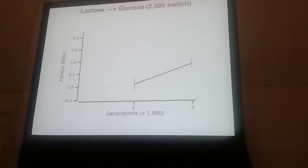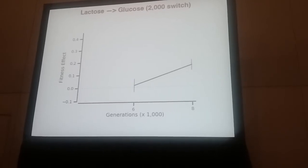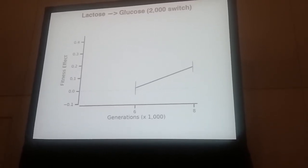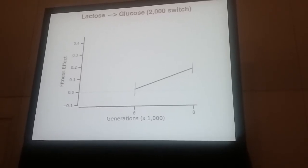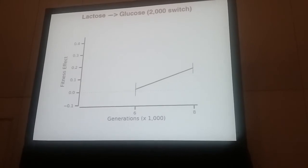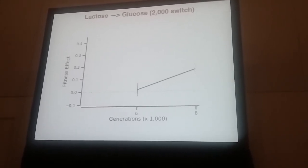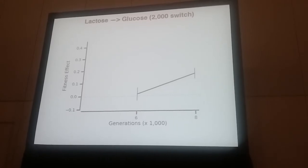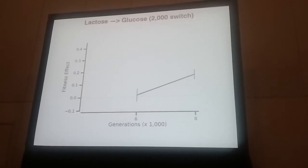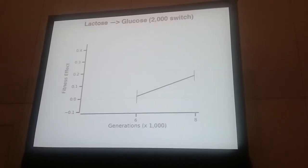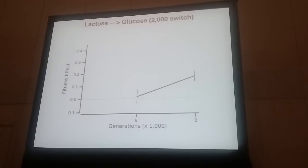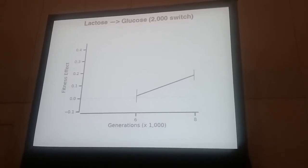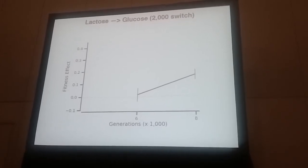I found this next one particularly interesting — this is the lactose-to-glucose 2,000-generation switching environment. There's only one population here that fixed the mutation. The first 2,000 generations were in lactose, then 2,000 in glucose, and from 4,000 to 6,000 was in lactose. At some point the mutation fixed and is slightly beneficial, though not significantly, at 6,000 generations. We know that in the ancestor, mutations that inactivate the lac I repressor are costly in glucose — the environment this population was in for 2,000 generations. But the fitness effect increases over time, indicating compensatory mutations going on such that whatever trade-offs this mutation has are compensated for by subsequent mutations, and when you remove them, you not only remove that fitness benefit but also those positive interactions.